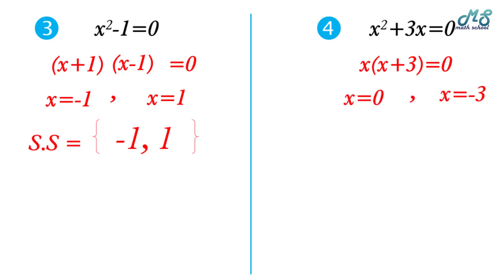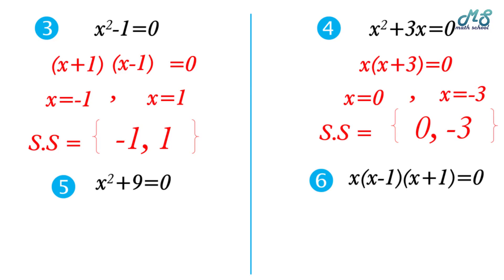Number five: x squared plus 9 equals zero. This is the sum of two squares. Moving 9 to the other side gives x squared equals negative 9. The square root of negative 9 is not a real number, so the solution set is the null set, phi.